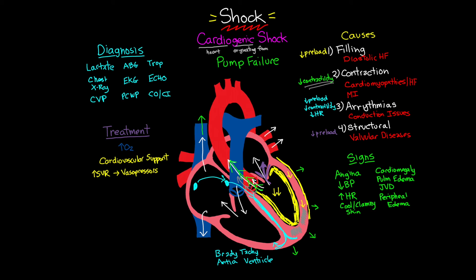For vasopressors we're talking things like levo, neo, vaso, and potentially epinephrine. The next thing to support is increasing contraction — here we're really talking about our inotropes, such as dobutamine and primacor. Epinephrine, which may also be used to increase SVR, can have a positive impact on contractility of the heart and sometimes serves a dual purpose. In addition, depending on what is going on with your patient, you may also need to look at fixing arrhythmias — perhaps increasing heart rate with dopamine or epi.